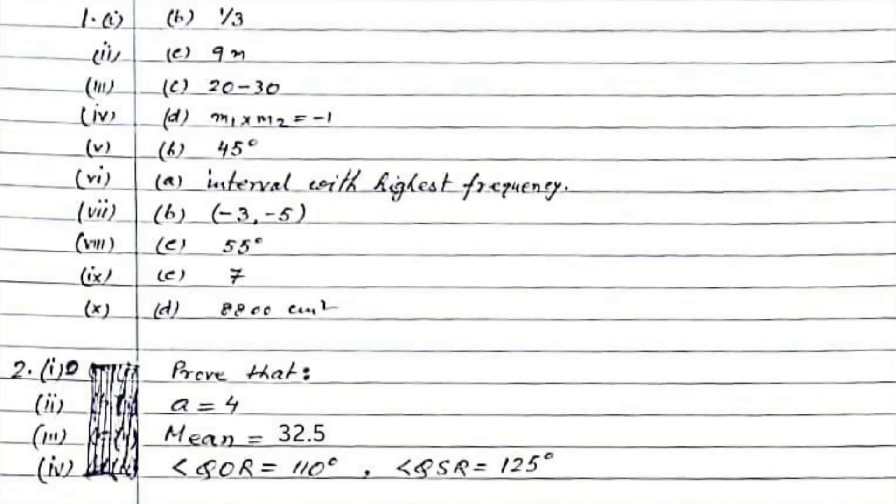Question 3: calculate the mean of the following frequency distribution. The mean equals 32.5. Question 4: the two parts A and B, the first one will be 110 degrees, the second one will be 125 degrees.